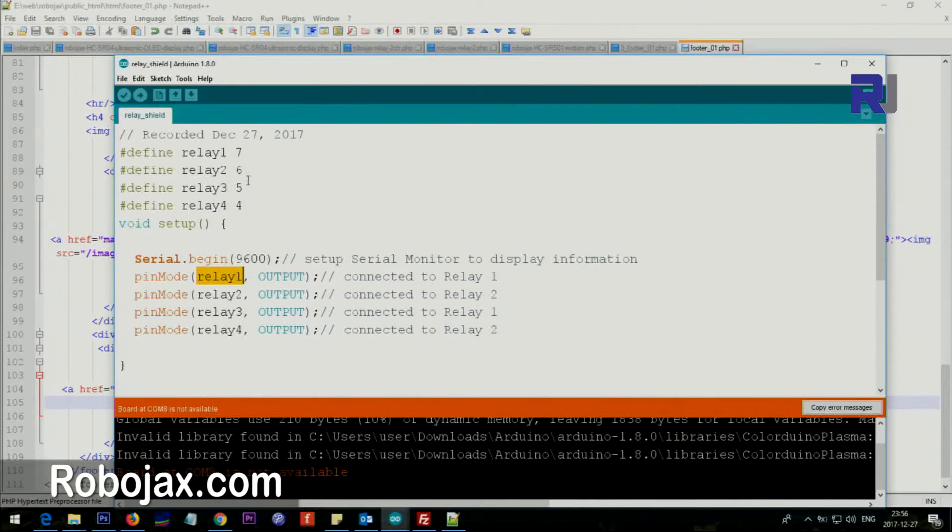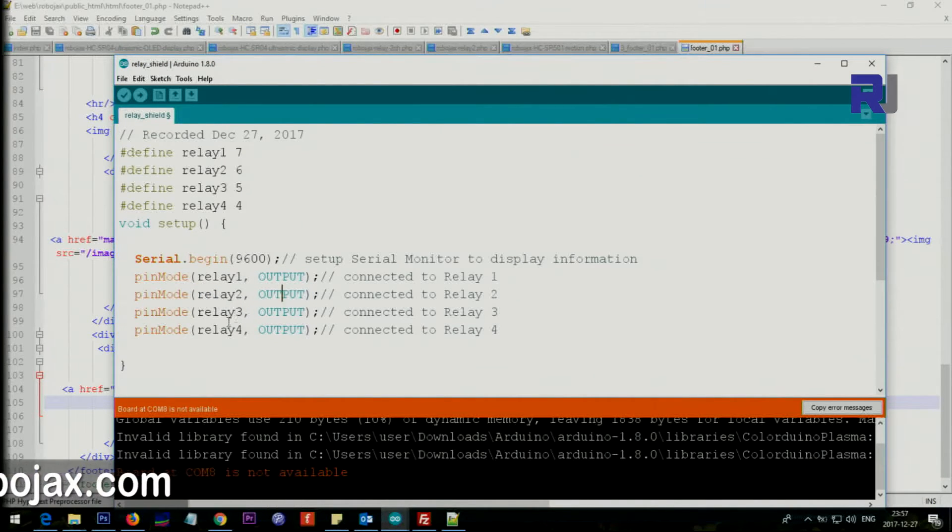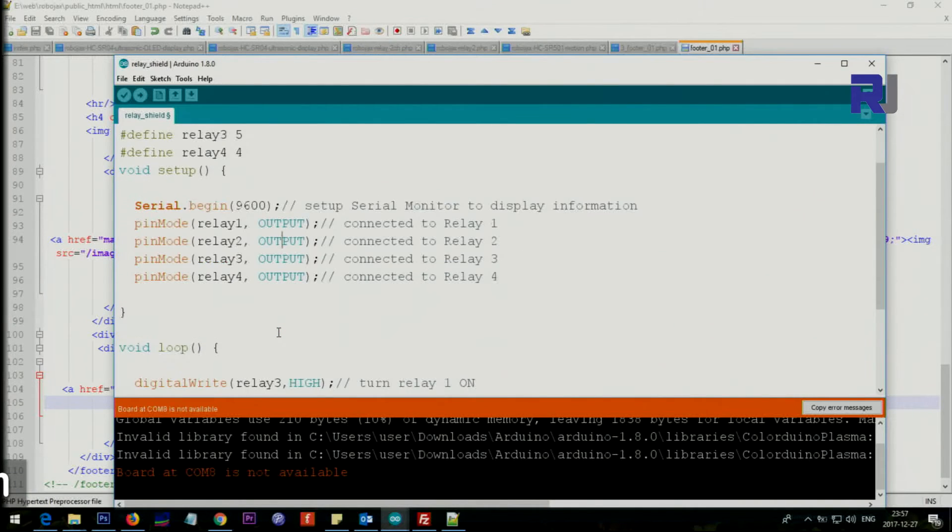Relay 1, so this says 7, so as if I type here 7, so pin mode 7 is output. And then relay 2, relay 2 is output, relay 3 as output, relay 4 output. So these are those numbers, so we are defining the pins as an output.